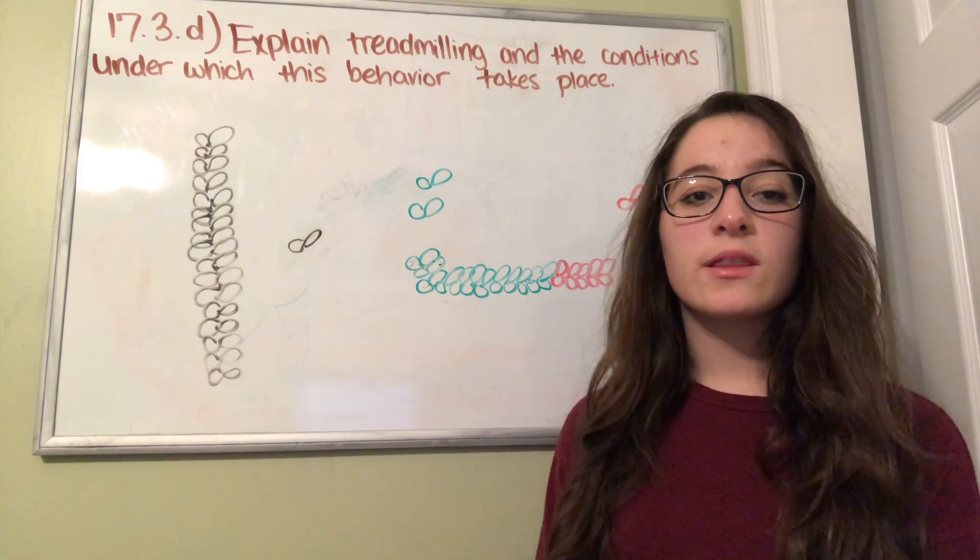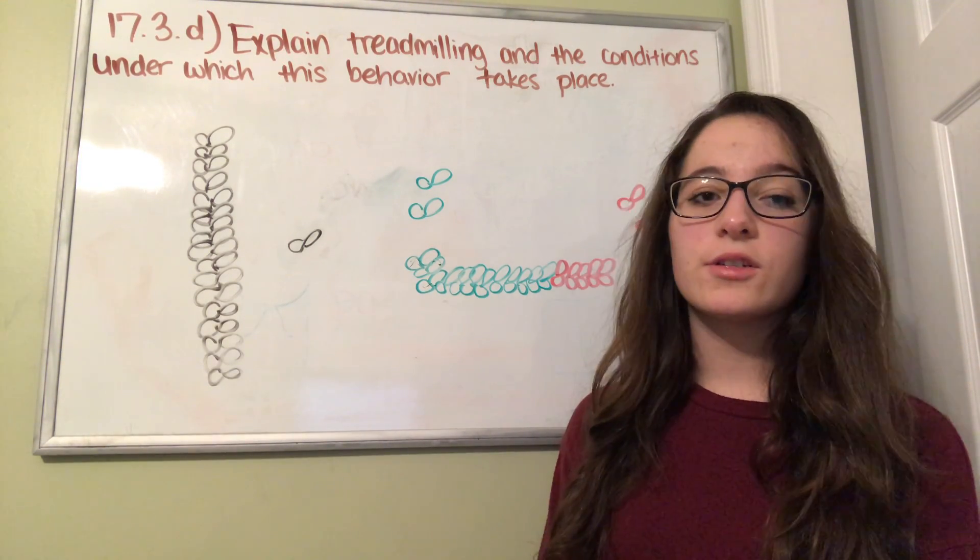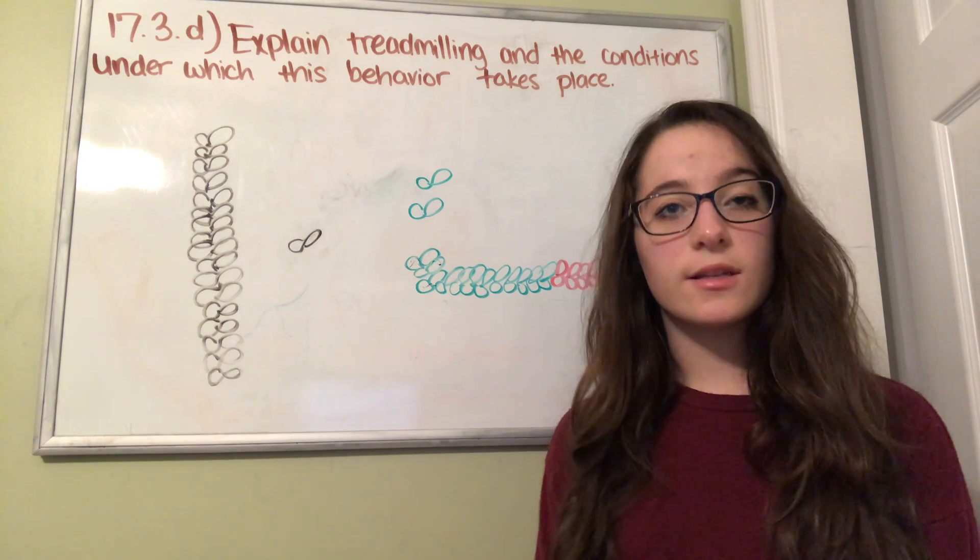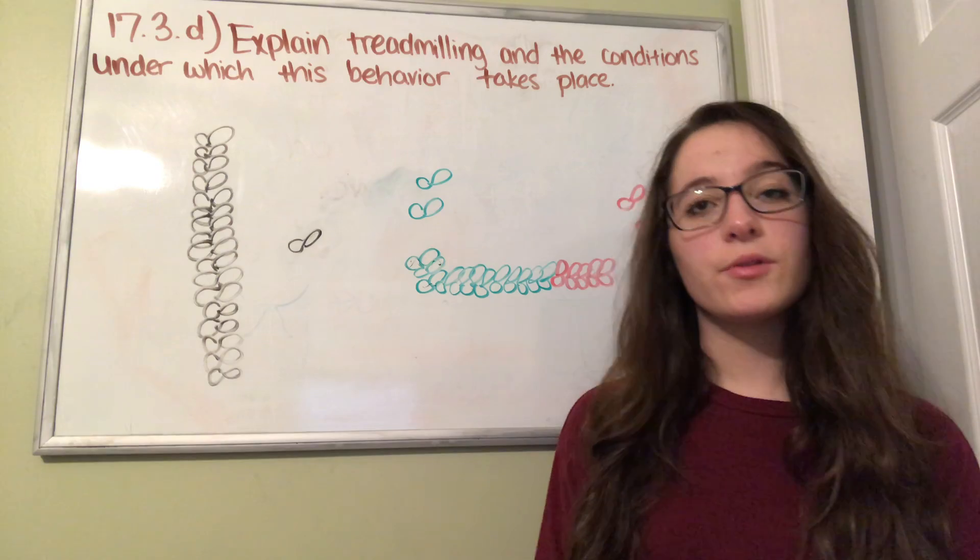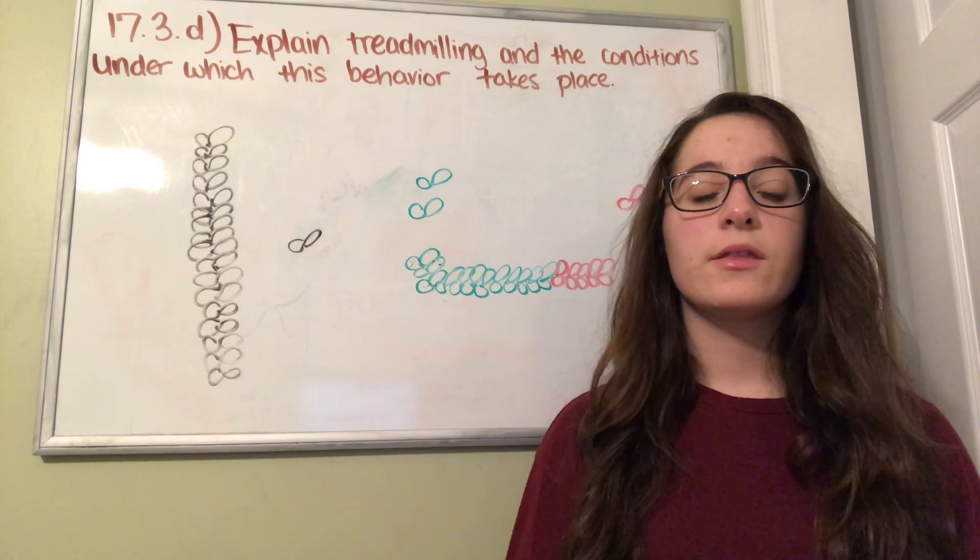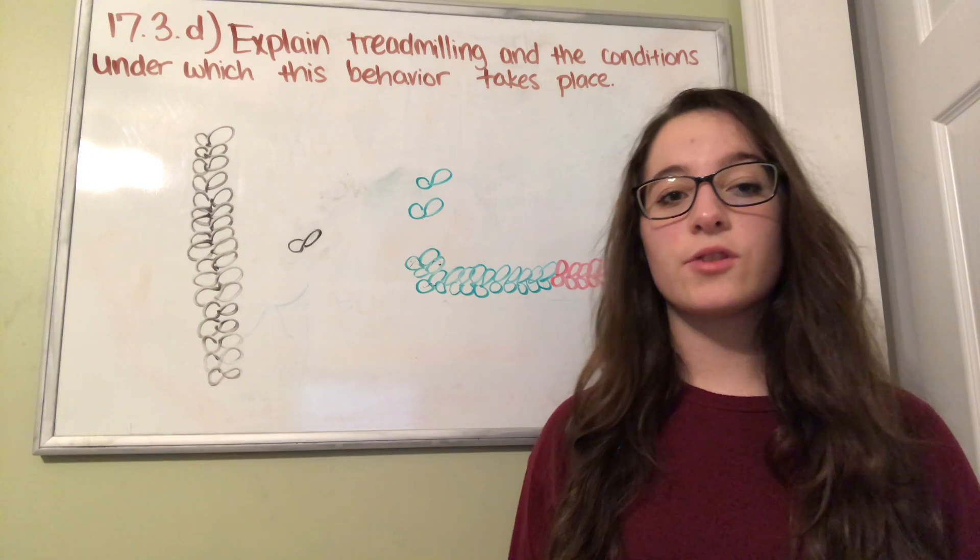In this video I will be explaining the process of treadmilling and the conditions under which this behavior takes place. Actin filaments are thin flexible proteins that make up part of a cell's cytoskeleton. They're needed for cell movement and muscle contraction.